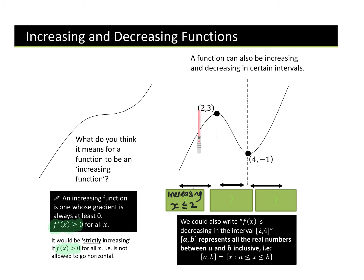In between 2 and 4, what's happening with our gradient? Our gradient is decreasing — we have a negative gradient. That's a decrease. So we're decreasing between 2 ≤ x ≤ 4. And then what's happening when x is greater than or equal to 4? We are increasing.